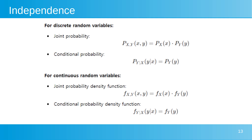When two random variables X and Y are independent, their joint probability or density function can be expressed as the product of their individual marginal functions. For discrete random variables, the joint probability is P(X,Y) = P(X) * P(Y), and the conditional probability is P(Y|X) = P(Y). For continuous random variables, the joint PDF is f(X,Y) = f(X) * f(Y), and the conditional PDF is f(Y|X) = f(Y), indicating that the distribution of Y does not depend on X and vice versa.